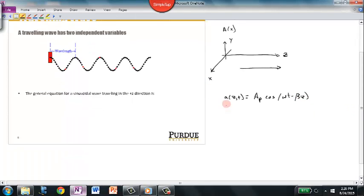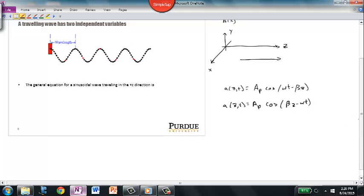If you look it up on YouTube or some other electromagnetics textbook, you may see it written as AP cosine of beta z minus omega t, and that's not incorrect. You just have to remember that cosine of theta is equal to cosine of minus theta. It's an even function, and so therefore those two statements are logically equivalent.